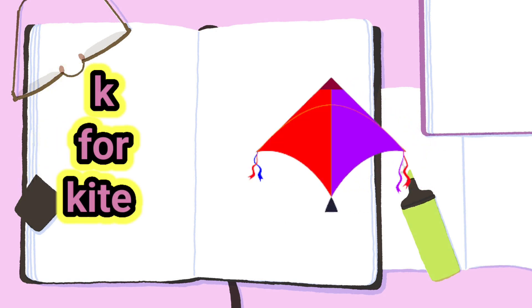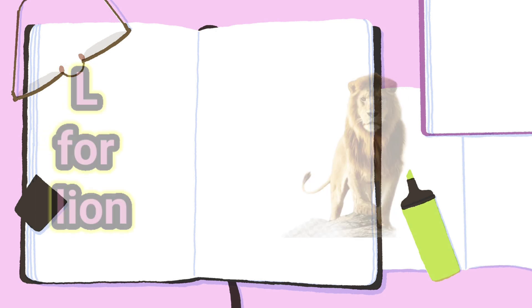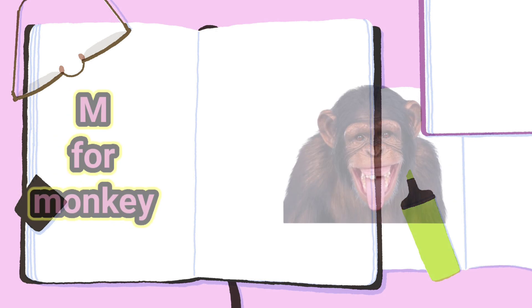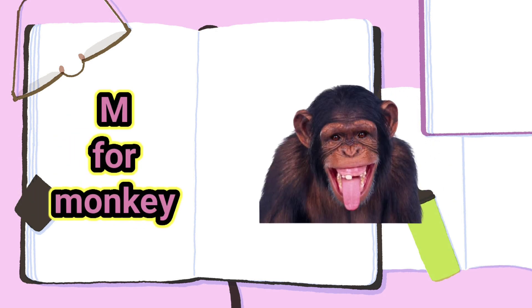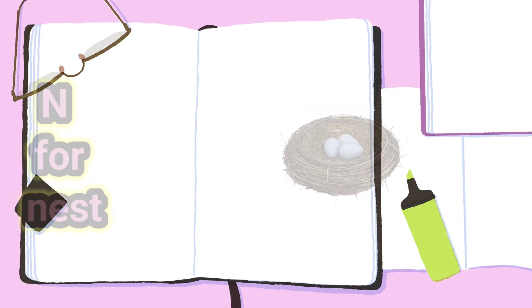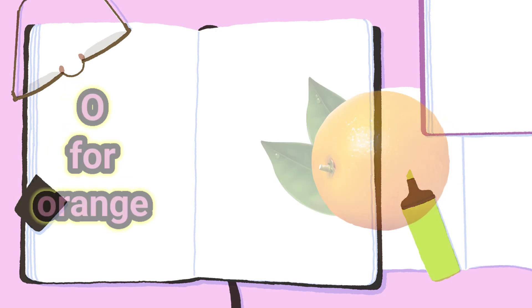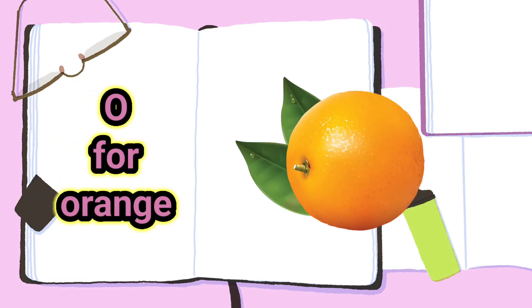K for kite, L for lion, M for monkey, N for nest, O for orange.